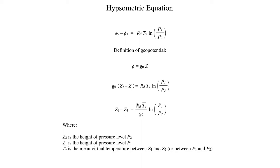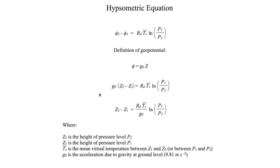TV-bar is the mean virtual temperature between geopotential heights Z1 and Z2, or equivalently between P1 and P2. Virtual temperature accounts for the moisture content of the air so that we don't have to worry about partial pressures of moist versus dry air — it combines it all into one simple equation. g0 is the acceleration due to gravity at ground level, a roughly constant 9.81 meters per second squared, and Rd is the dry air gas constant, 287 joules per kilogram per Kelvin.